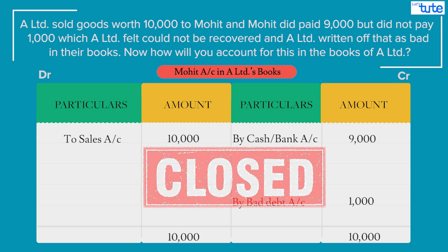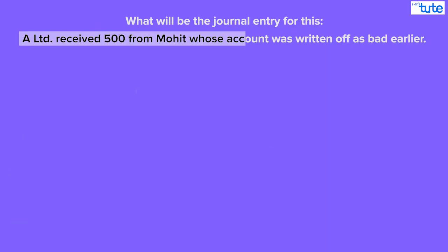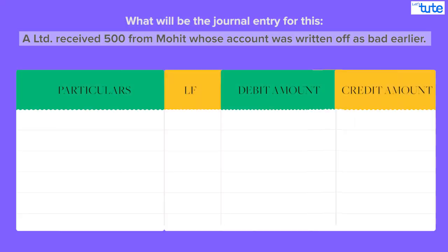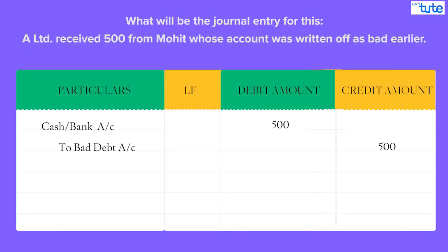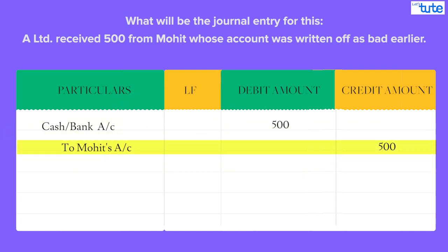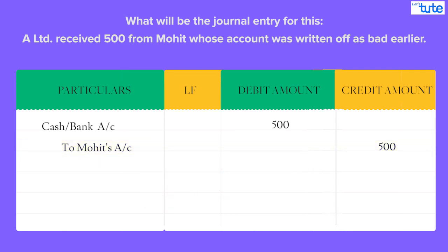Now let's go back to our first question. Say after a year, A Limited received 500 from Mohit whose account was written off as bad earlier. Here, if you say the entry should be cash/bank account debit to bad debts account, then you are crediting a loss account — that is the bad debts account — which is incorrect. If you say cash/bank account debit to Mohit account, then you are crediting that party's account whose account was already closed a year before. And now when you credit it, Mohit will become our creditor to whom A Limited has to pay the amount.